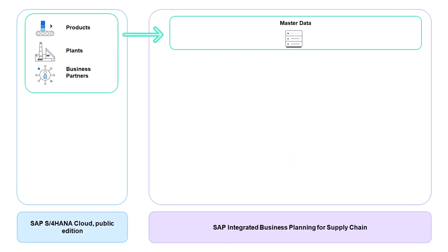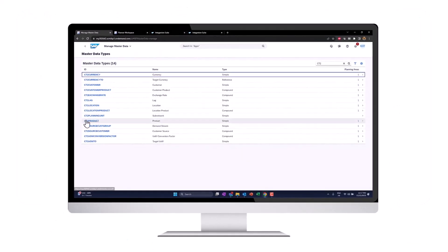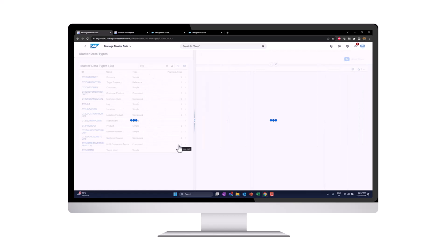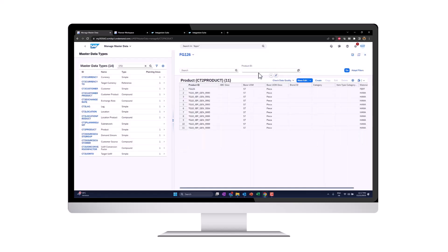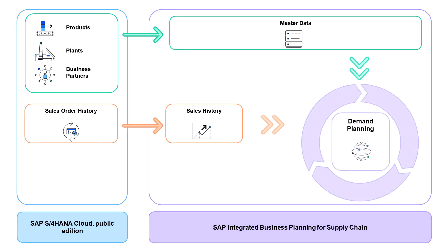This first scope covers the demand planning process and starts by integrating the required master data — such as products, business partners, and locations — from SAP S/4HANA Cloud Public Edition into SAP Integrated Business Planning. We are then able to transfer sales history from SAP S/4HANA Cloud Public Edition records into SAP Integrated Business Planning key figures, which serves as the main input for our demand planning process.